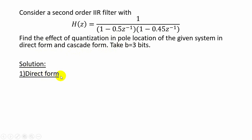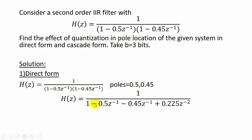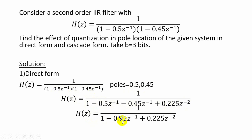First we will check with the direct form realization. For the given transfer function, the poles are z equal to 0.5 and z equal to 0.45. When you multiply the two terms you will get 1 minus 0.5 z-inverse minus 0.45 z-inverse plus 0.225 z to the power minus 2. So H(z) is equal to 1 by 1 minus 0.95 z-inverse plus 0.225 z to the power minus 2. Now the coefficients are 0.95 and 0.225.